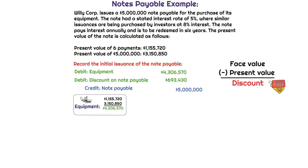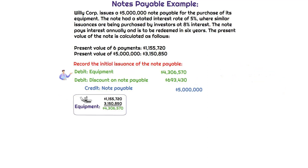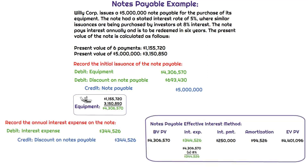Step one is determining the present value. Using present value factors — the sum of the PV of interest payments and the PV of the principal — the present value equals $4,306,570. The difference between the $5 million face value and the $4,306,570 present value gives us a discount of $693,430. For the initial issuance journal entry: debit Equipment for $4,306,570, credit Notes Payable for $5,000,000, and debit Discount on Notes Payable for $693,430.